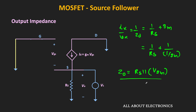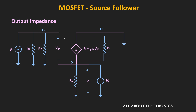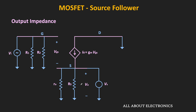If the output resistance of the MOSFET is finite, it will appear between the drain and the source terminal. Since the drain terminal is at AC ground, it appears between the source and the ground terminal. In that case, instead of Rs, we have Rs parallel r0, meaning the output impedance of the source follower equals Rs parallel (1/Gm) parallel r0. Typically, 1/Gm is in ohms, so the overall output impedance will be less than 1/Gm. Therefore, the output impedance of the source follower is also in ohms, and this low output impedance is particularly useful in driving the low impedance load.